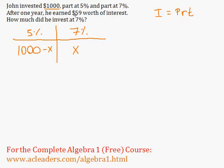So after one year, he earned $59 worth of interest. So $59 is what he earned. And to obtain interest from each value here, these guys are just going to represent the principles for each part. And let me do this just step by step.